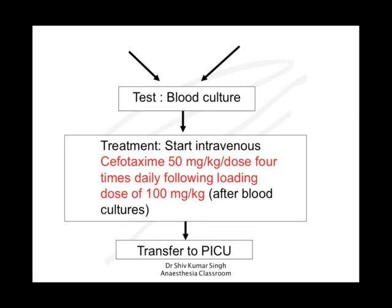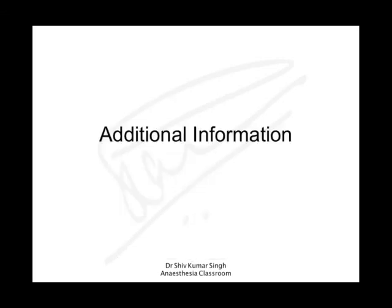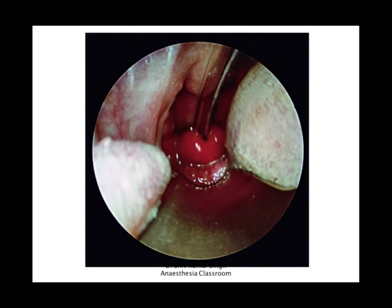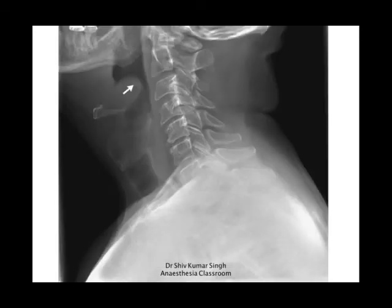The child is then transferred to PICU. This image shows the cherry red epiglottis that is seen in acute epiglottitis, and this is the thumb sign on the X-ray. Again, this X-ray is only obtained in a stable child — do not try to do an X-ray in a child who might be distressed.